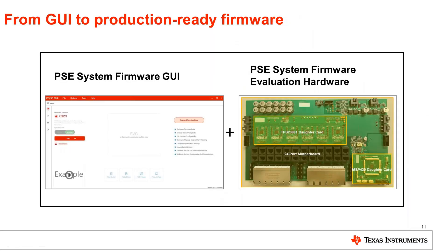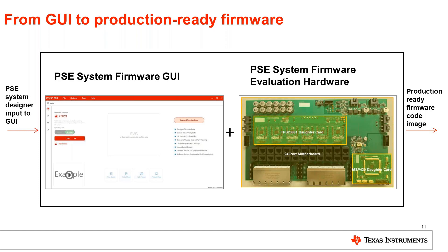The firm PSE GUI works as follows: once you have the evaluation hardware, download the firm PSE GUI, use the drop-down menus to input your configuration, and the output is a production-ready firmware code image that you can flash to your system for port power management in a production environment. TI aims to take as much heavy lifting as possible off the software side.